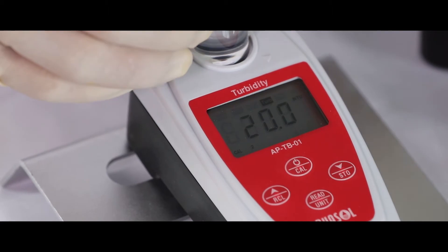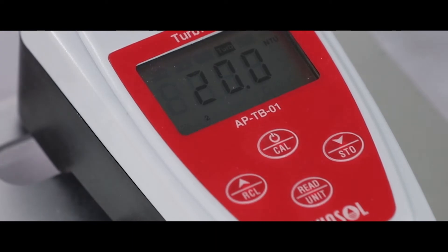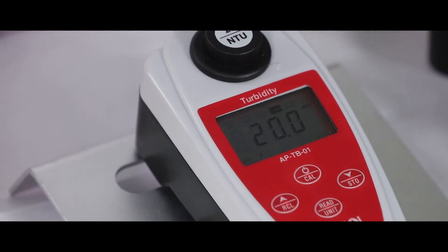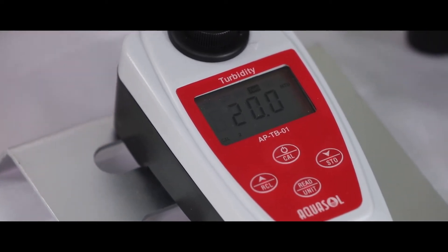Press the read key for calibration. The CAL icon will start flashing on the display. Once 20 NTU calibration is done, the meter will display 100 NTU and CAL 3.